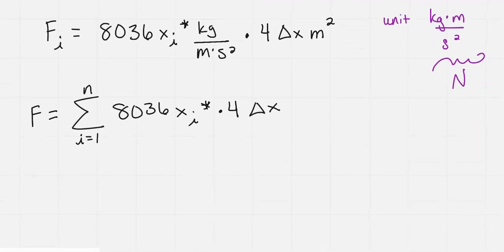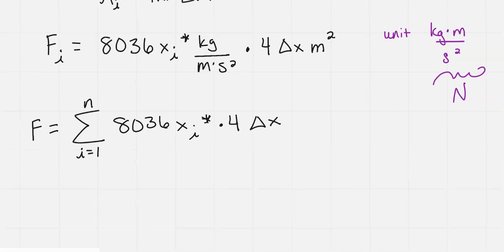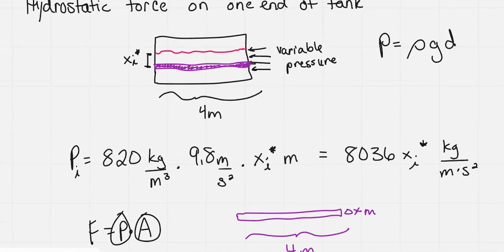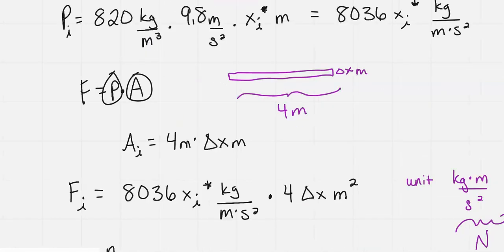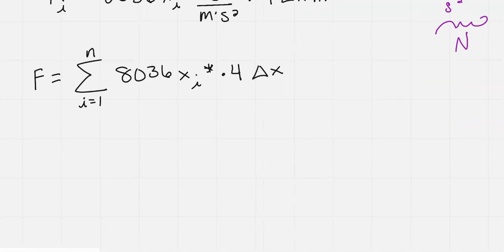And then if we take the limit, I'm not going to rewrite it, but if I were to put the limit in front of it, now we have the definition of an integral. And then if we look back at our picture, what are my limits of integration? From the level where I started x all the way down to the bottom, all the full liquid was 1.5 meters. So x starts at 0 and goes to 1.5. So I have the integral from 0 to 1.5 of 8,036 x times 4, dx.